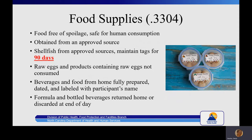Rule 3304 addresses food supplies. Food shall be in good condition, free from spoilage, filth, or other contamination and safe for human consumption. Shellfish may be served at an adult day service facility if it comes from approved sources and tags are retained for 90 days. Raw eggs or products containing raw eggs shall not be consumed by participants — this includes raw cookie dough, cake batter, brownie mix, milkshakes, ice cream, and other food products containing raw eggs. A pasteurized egg product may be used as a substitute. Beverages and food sent from home shall be fully prepared, dated, and identified for the appropriate participant at the participant's home.